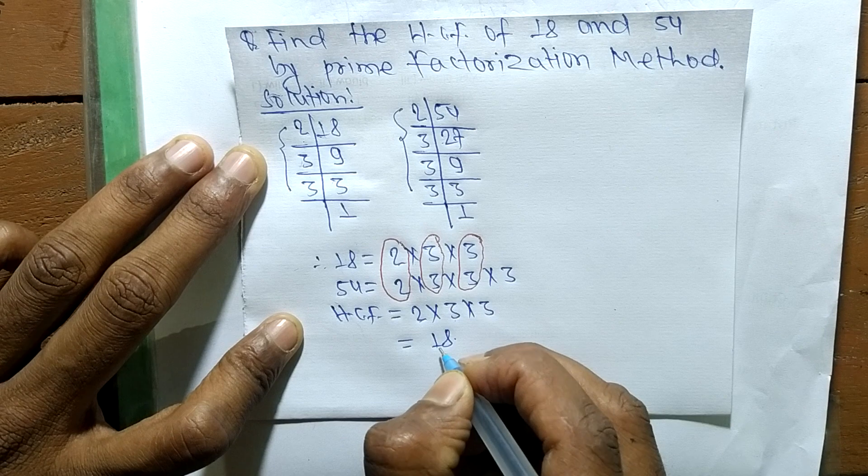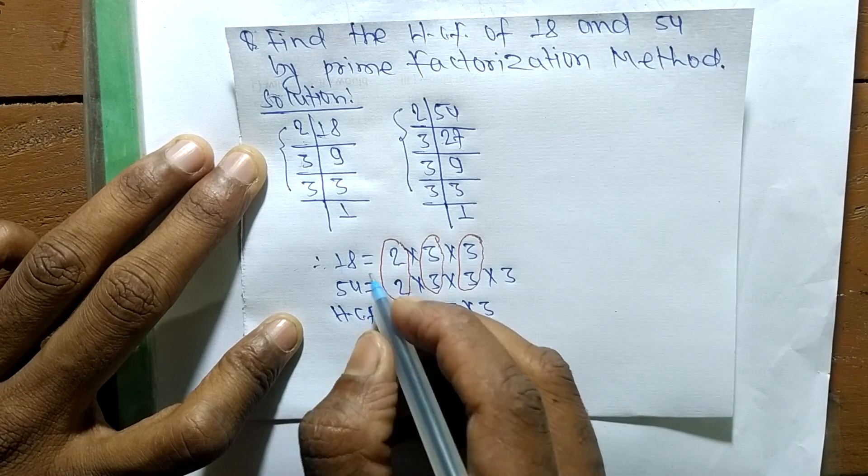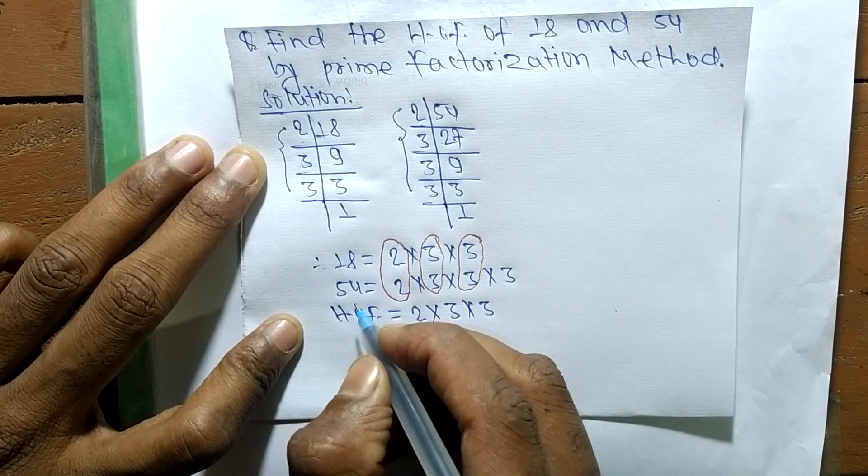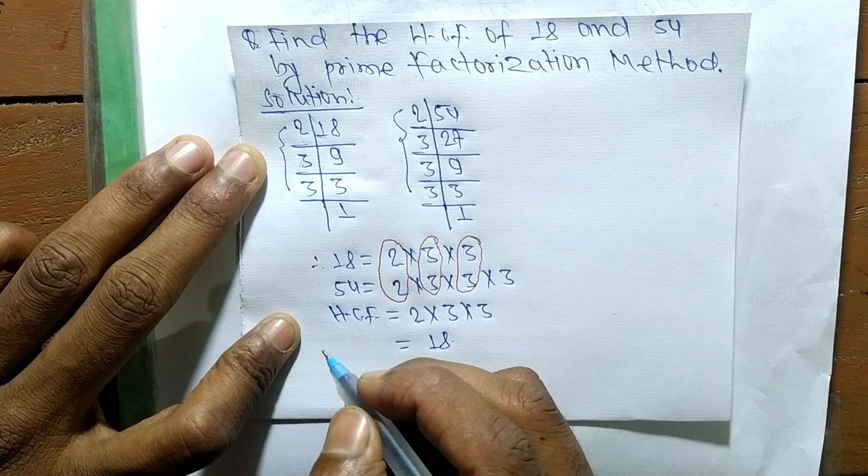18. So 18 is the highest common factor of 18 and 54. So this much for today and thanks for watching.